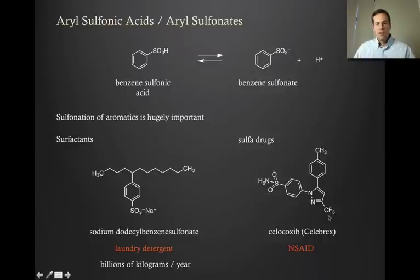I show one of the major sulfa drugs here, which is celecoxib, more commonly known as Celebrex, which was one of Pfizer's most successful drugs with profits measuring in the billions. This is actually a non-steroidal anti-inflammatory drug or an NSAID. This would be an alternative to something like ibuprofen. So nitration and sulfonation are massively important. Let's find out now how we can actually prepare these functional groups.